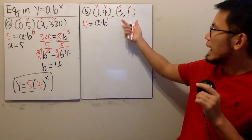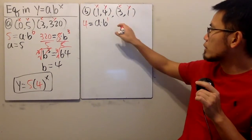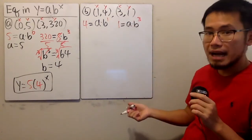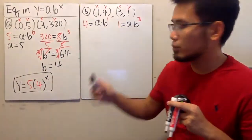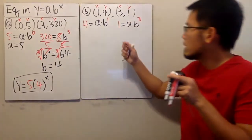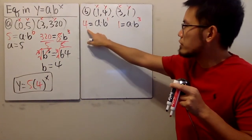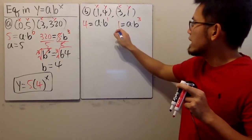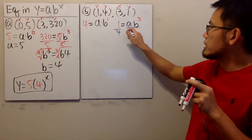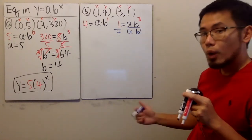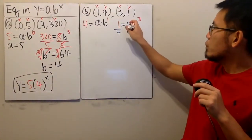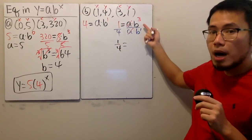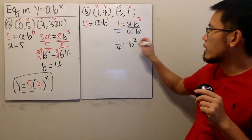Just like in the lecture videos, whenever we have this, what we do is look at the two equations. Here we have b to the third power on top. We divide the second equation by the first: 1 divided by 4 on the left, and a times b to the third over a times b to the first on the right. The a's cancel, giving us 1 over 4 equals b squared.